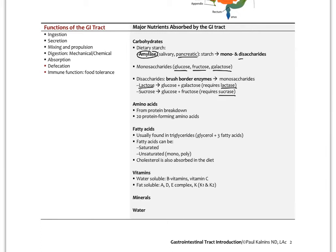Protein breakdown begins in the stomach with stomach acid and pepsin, continuing primarily in the small intestine where proteins are broken into dipeptides and then monopeptides. Brush border enzymes assist final dipeptide catabolism. There are 20 protein-forming amino acids. Nutrients from carbohydrates and amino acids enter the body via the portal vein, which carries all of this to the liver — the first organ exposed to those nutrients — where it processes them, makes proteins, stores glycogen, and adjusts blood sugar levels.